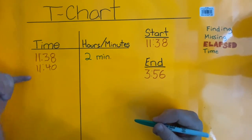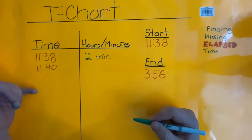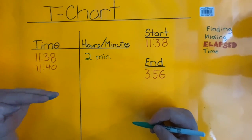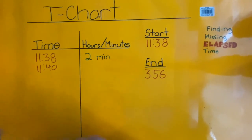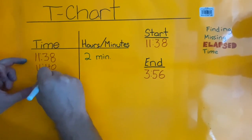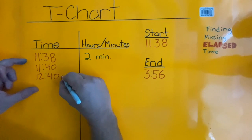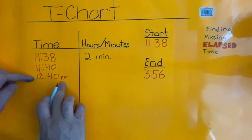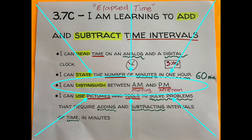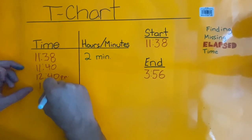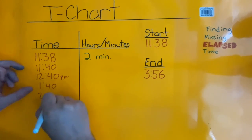Now we can start making bigger jumps — we're going to go with hours. We're going to go from 11:40, counting up by hours until we reach the 3 o'clock hour. So we'll start at 11:40, jump to 12:40. Now we are in PM — remember, we've gone from the morning and now we're in the afternoon, from AM to PM. Then 12:40 PM, 1:40, 2:40, 3:40.